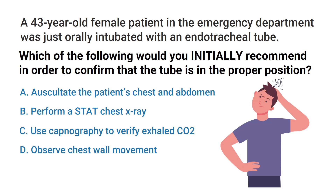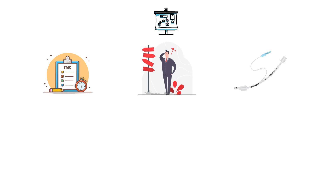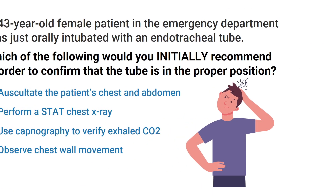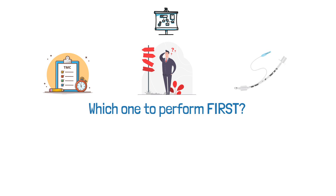Do you know the answer? Let's break it down. For the TMC exam, you must know how to confirm that the ET tube is in the proper position. This question is kind of tricky because the answer choices are all correct methods of confirming tube placement. The keyword in the question is the word 'initially,' because the question requires that you know which one to perform first.